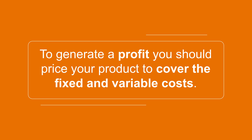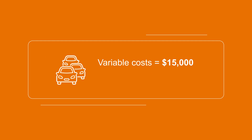To generate a profit, you should price your product to cover the fixed and variable costs. For example, ABC car dealership has a variable cost of $15,000 per car sold and a total fixed cost of $200,000 a year. Therefore, the dealership should sell a car for more than $15,000 to cover the variable costs and have enough funds to cover the fixed cost of $200,000.